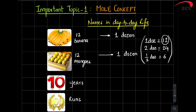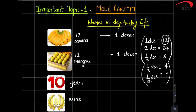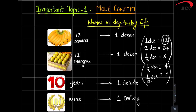Somebody says 24, you say 2 dozen. 6 — half a dozen. 4 — one third dozen. 1 — one twelfth dozen. So you can use a fraction to specify any number in terms of dozen. Similarly, in day-to-day life for 10 years we say one decade, and for 100 runs we say one century. So we have names for various numbers.